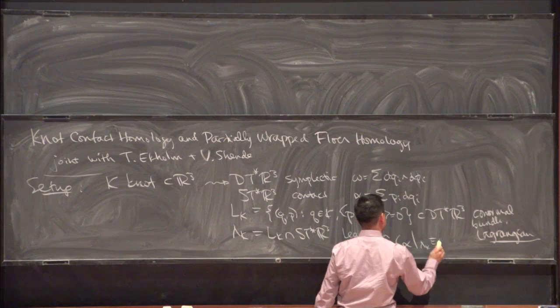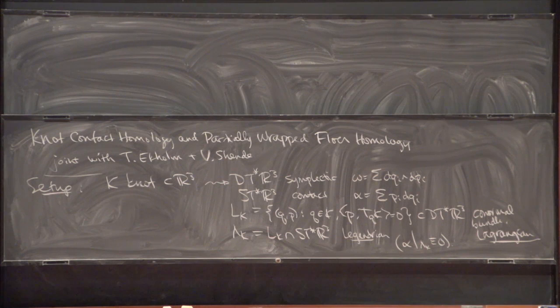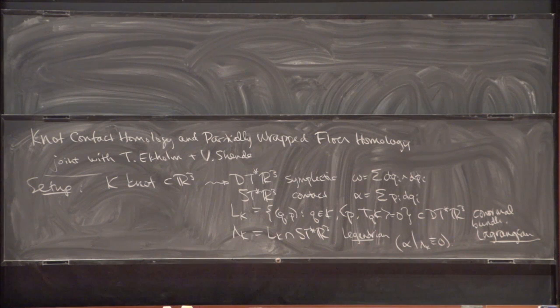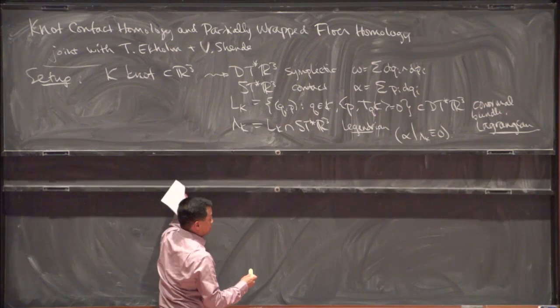So the picture is — I'll use this board as a schematic. Here's R³, here's the disk cotangent bundle to R³, and its boundary is the cosphere bundle. Inside of R³ there's a knot K. The co-normal bundle is a Lagrangian that intersects the zero section along K — so this is L_K. And where it hits the boundary, this is the Legendrian Lambda_K.